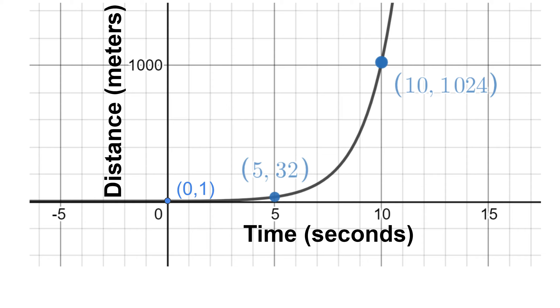A couple key features of this graph: the domain is 0 to infinity, and the range is 1 to infinity in this context, because we're only looking at the first quadrant of positive time and distance values, because that's what makes sense in this scenario. The entire graph of 2^t, if we didn't restrict the domain, would be different.